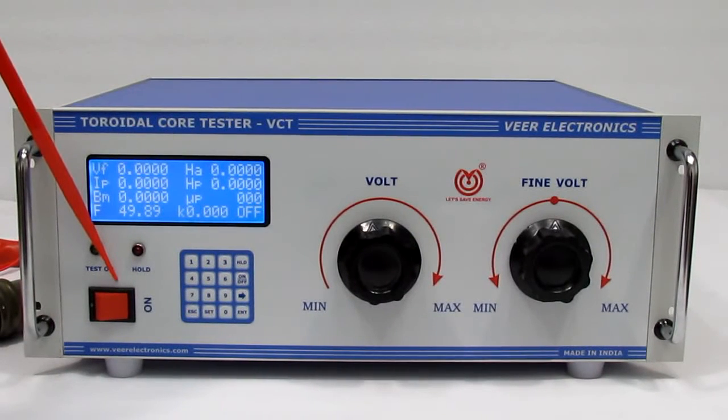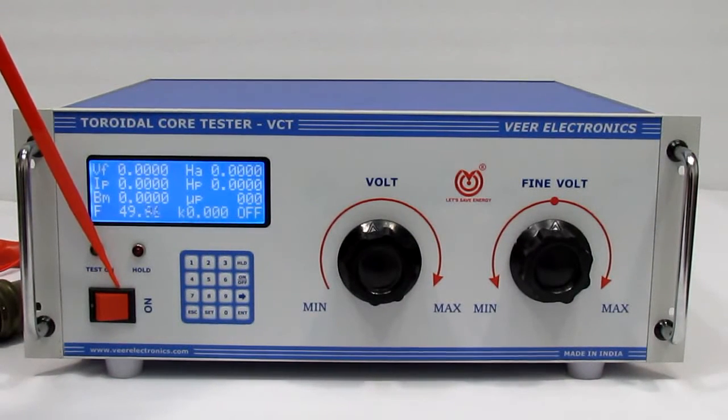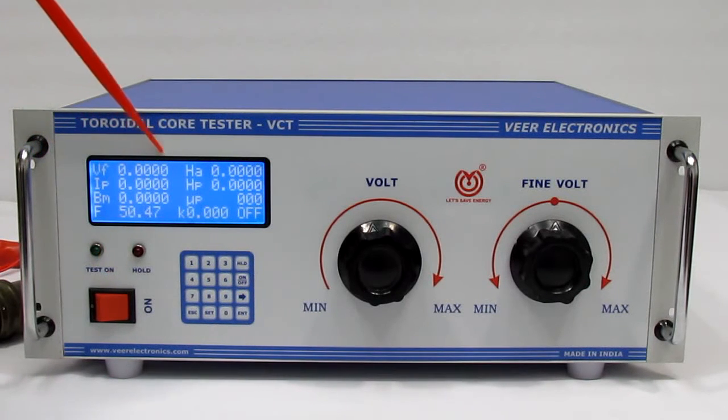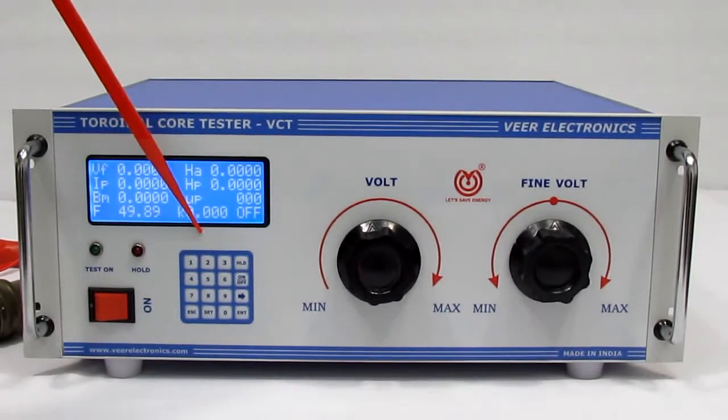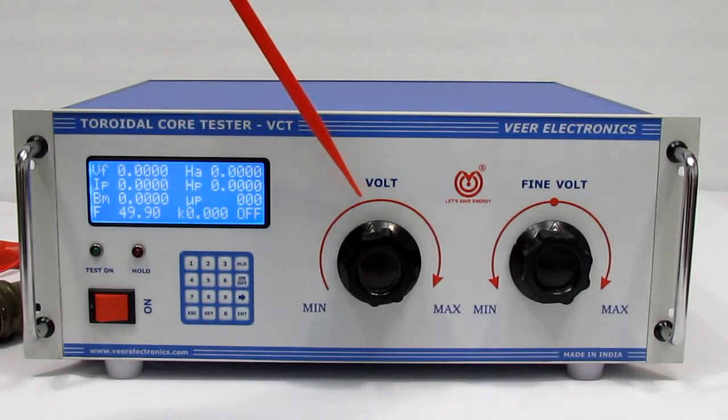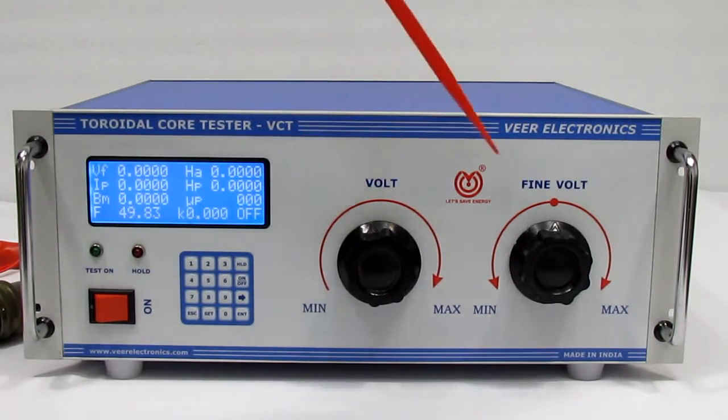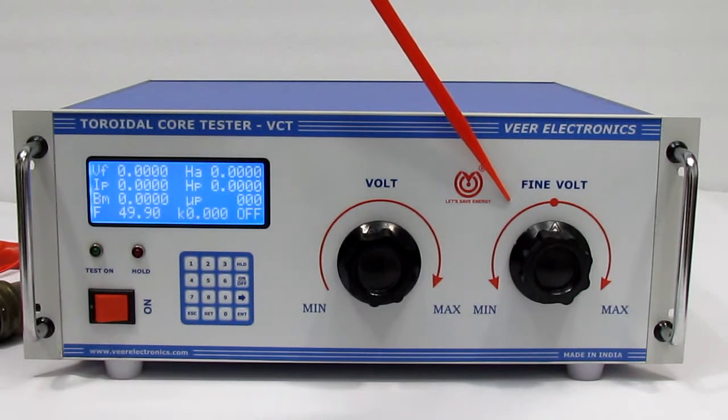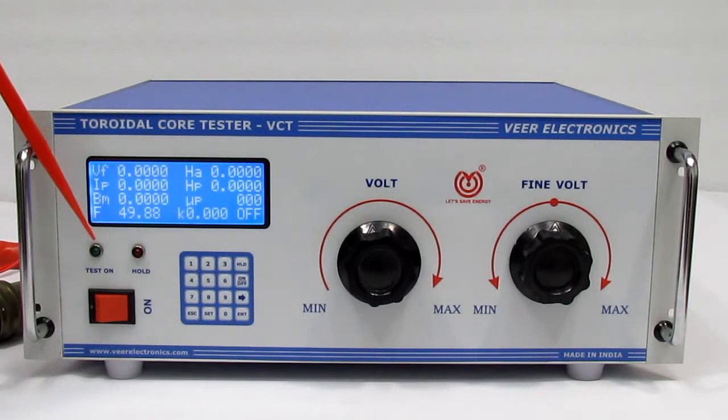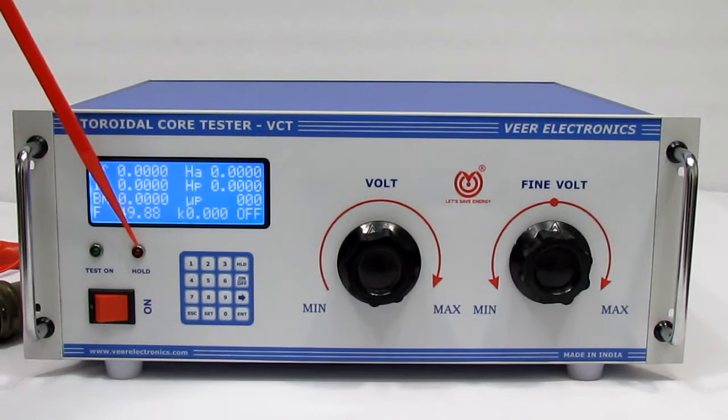This is an on-off switch to turn on the instrument. This is the LCD display. It shows the measured parameters. This is a numerical keypad. This is a flux voltage knob to vary flux voltage, and this is a fine flux voltage knob for fine tuning of flux voltage. Test on LED indicates measurement is on, and hold LED indicates measurement is hold.